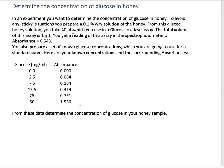First, we make a 0.1% weight per volume solution of honey to avoid any sticky situations. From this diluted honey solution, we take 40 microliters and use that in a 1 milliliter glucose oxidase assay.